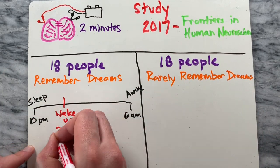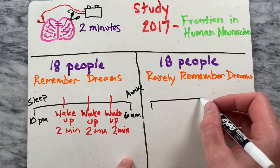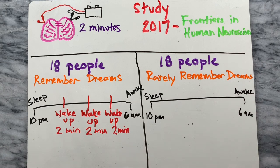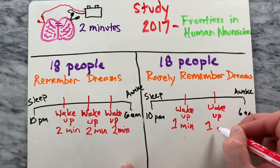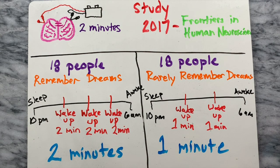These middle-of-the-night awakenings lasted an average of two minutes for high recallers, whereas low recallers awakenings lasted for an average of one minute. So you can see there's a big difference in the small amount of awake time between the two groups.